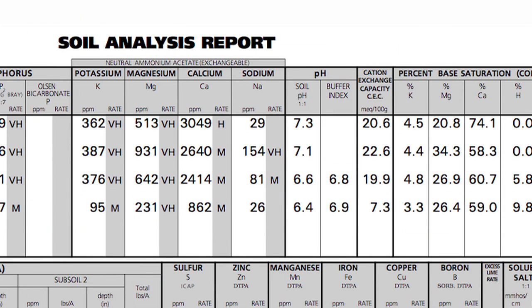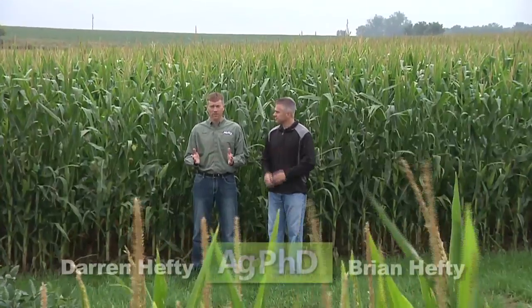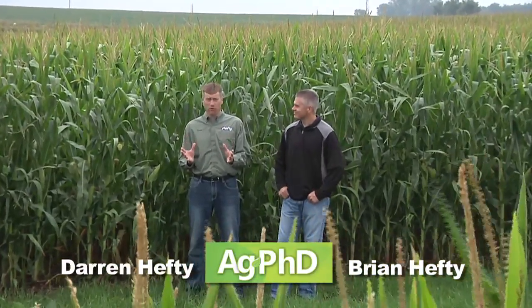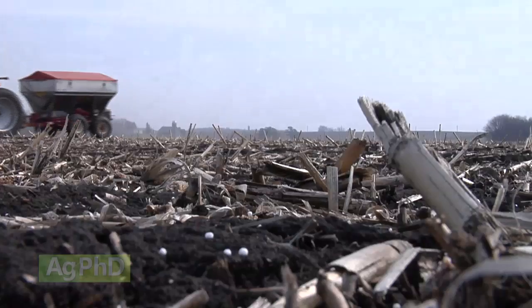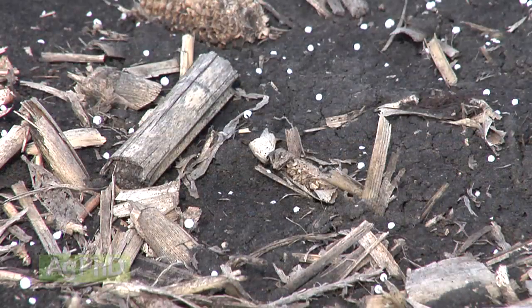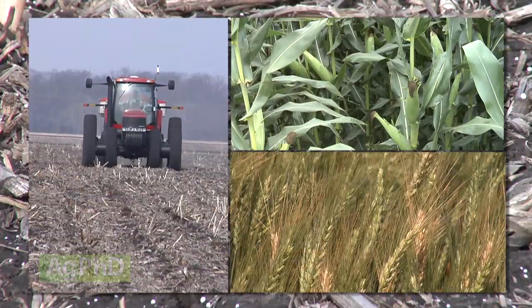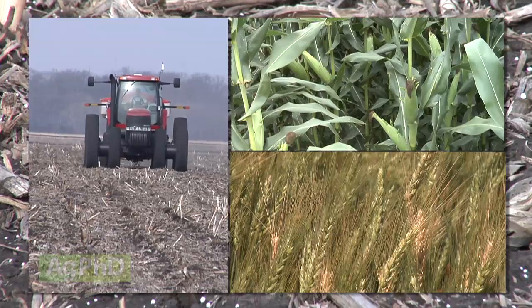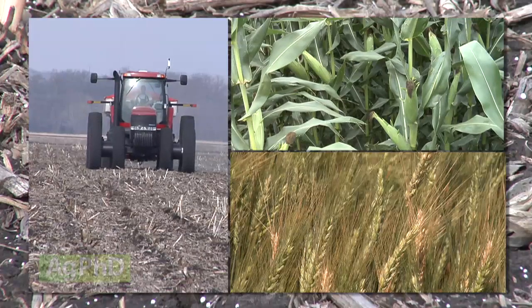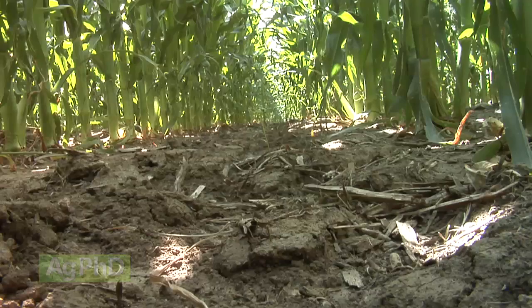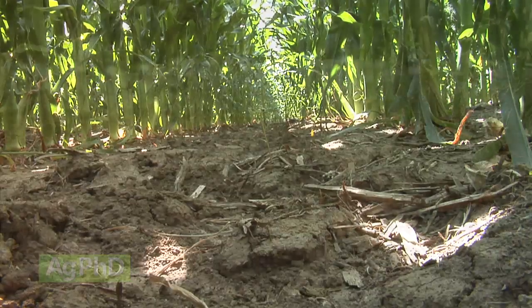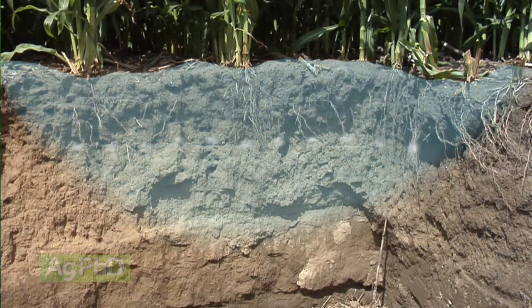During our Farm Basics time today, we're going to talk a little about cation exchange capacity, or CEC. We get many questions throughout the year about how much fertilizer or plant food a soil can hold. This specifically comes into play when we think about nitrogen recommendations for crops like corn and wheat, because nitrogen can convert to nitrate — a form that can actually leach down through the soil.